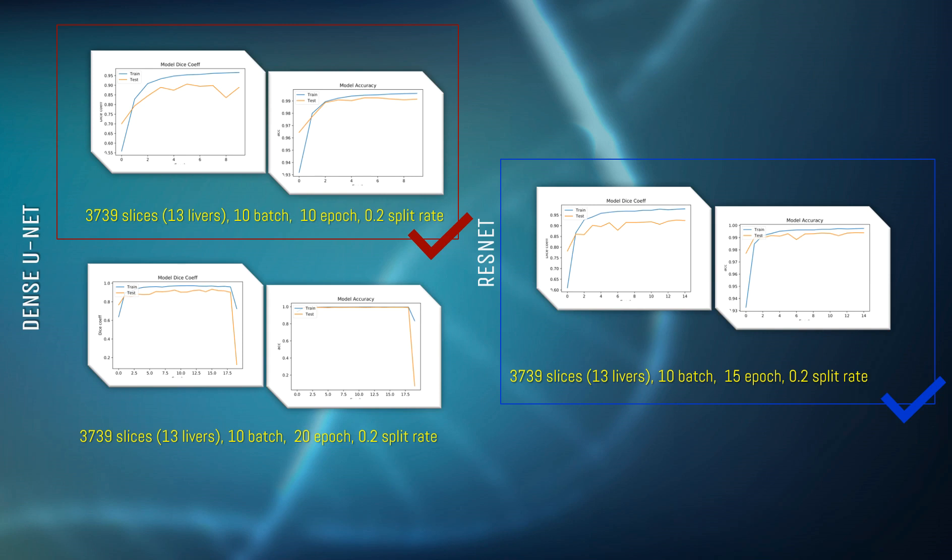Dense U-Net and ResNet have a very deep layered structure and can increase the training process for a very long time with the existing hardware. That's why a structure that needs to be checked regularly with checkpoints has become more effective. You can see the most successful results in the images.